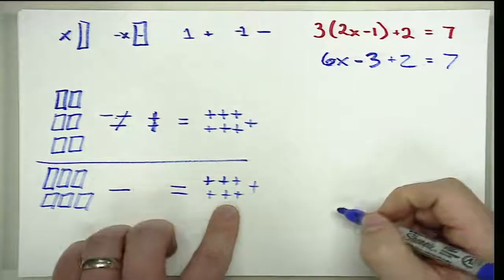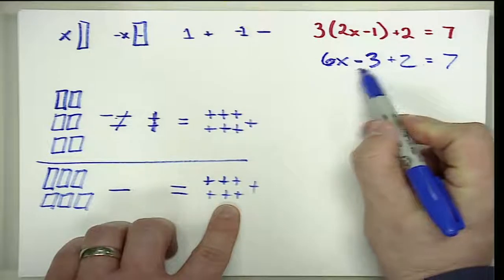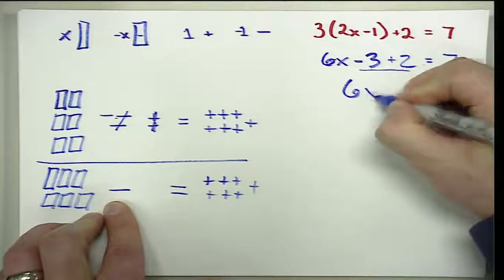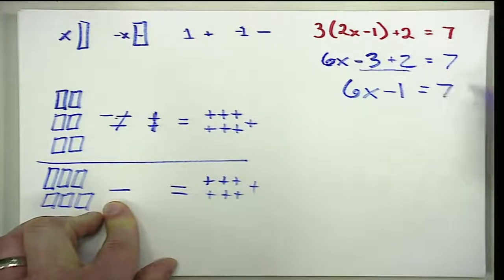So again, we can see how negative 3 and positive 2 simplify to a negative one. So that would be 6X minus 1 is equal to 7.